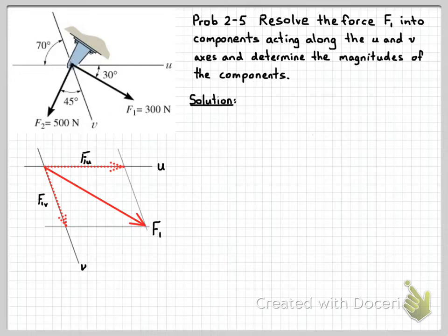Now having drawn our vector diagram, we just need to make use of trigonometry. We can see that this angle here is 40 degrees because we've got a total of 70 here opposite our 70 over here. So we can put that on our vector diagram.